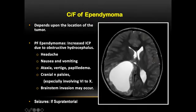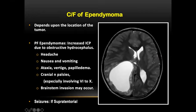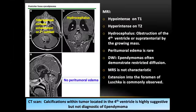Clinically, since two-thirds of intracranial ependymomas in children arise from the posterior fossa, symptoms depend on location. Infratentorial tumors mostly arise from the fourth ventricle, causing obstruction leading to obstructive hydrocephalus and raised intracranial pressure. If there is brainstem invasion, features like loss of balance and ataxia appear. For supratentorial tumors, seizures are a common clinical feature.